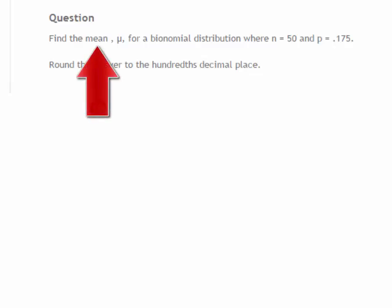In this problem, we're asked to find the mean, μ, for a binomial distribution where n equals 50 and p, the constant probability, equals 0.175.